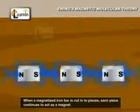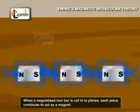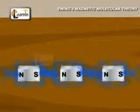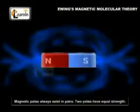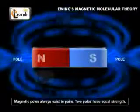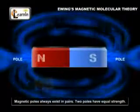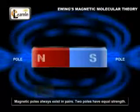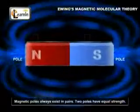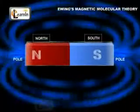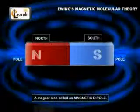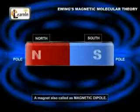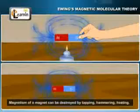When a magnetized iron bar is cut into smaller and smaller pieces, each piece continues to act as a magnet. By extension of this logic, the smallest possible piece — a molecule — is also a magnet. Magnetic poles always exist in pairs, and the two poles have equal strength. Since any magnet consists of two poles, N and S, a magnet is also called a magnetic dipole.